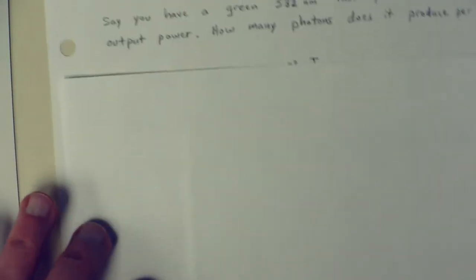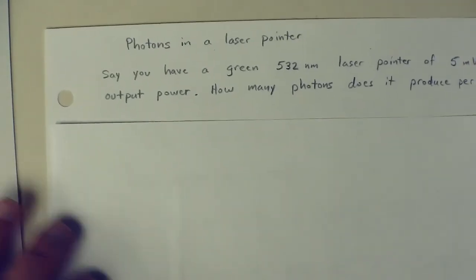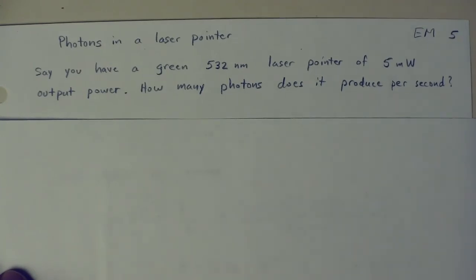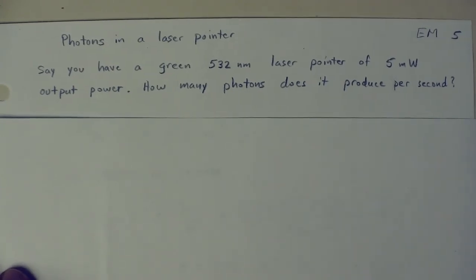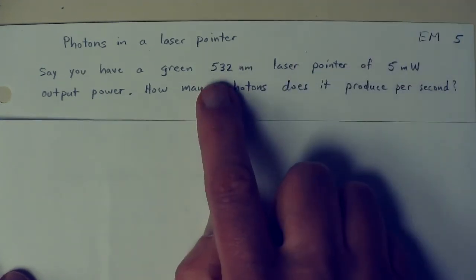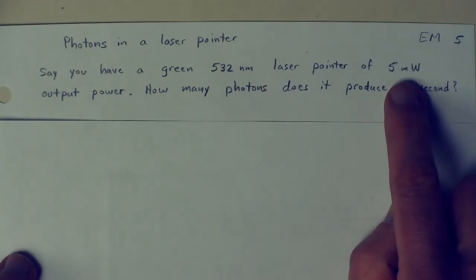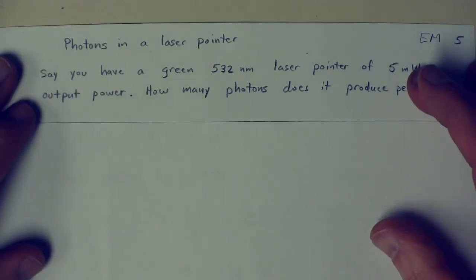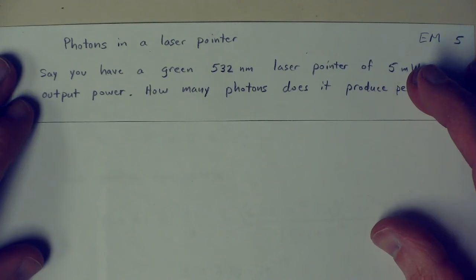Now let's look at the particle behavior a little bit more. So what happens if you've got a green laser pointer, 5 milliwatts power? And the question is, how many photons does it produce per second? All we know is that it's green, and it puts out 5 milliwatts of power. We know the wavelength. That's the green part. And it's 5 milliwatts of output power. So how do we get how many photons that represents?